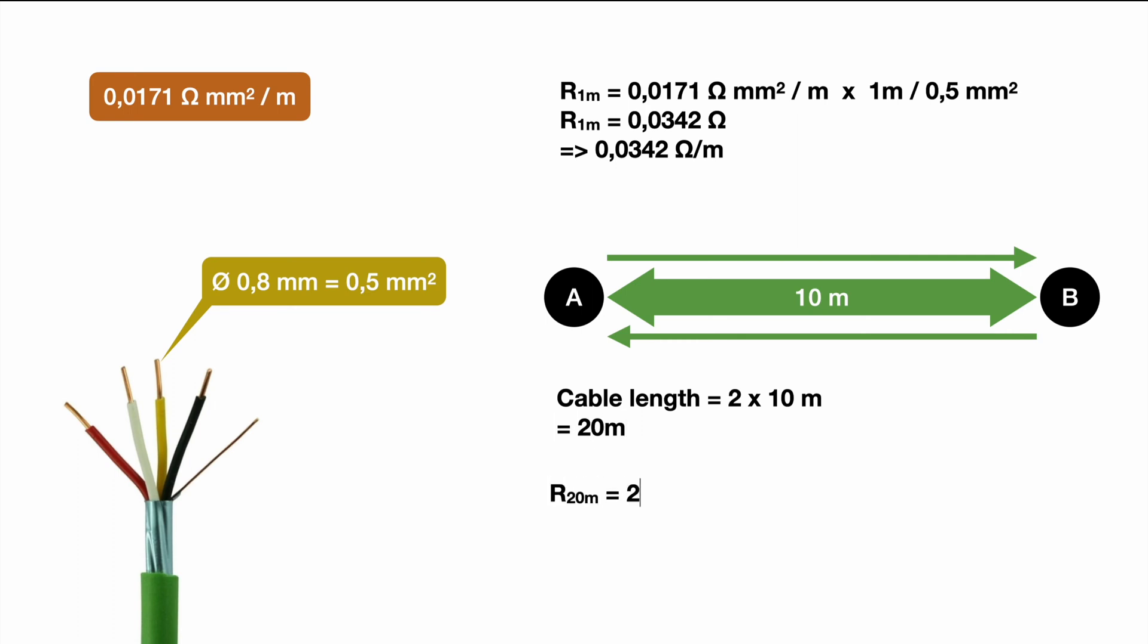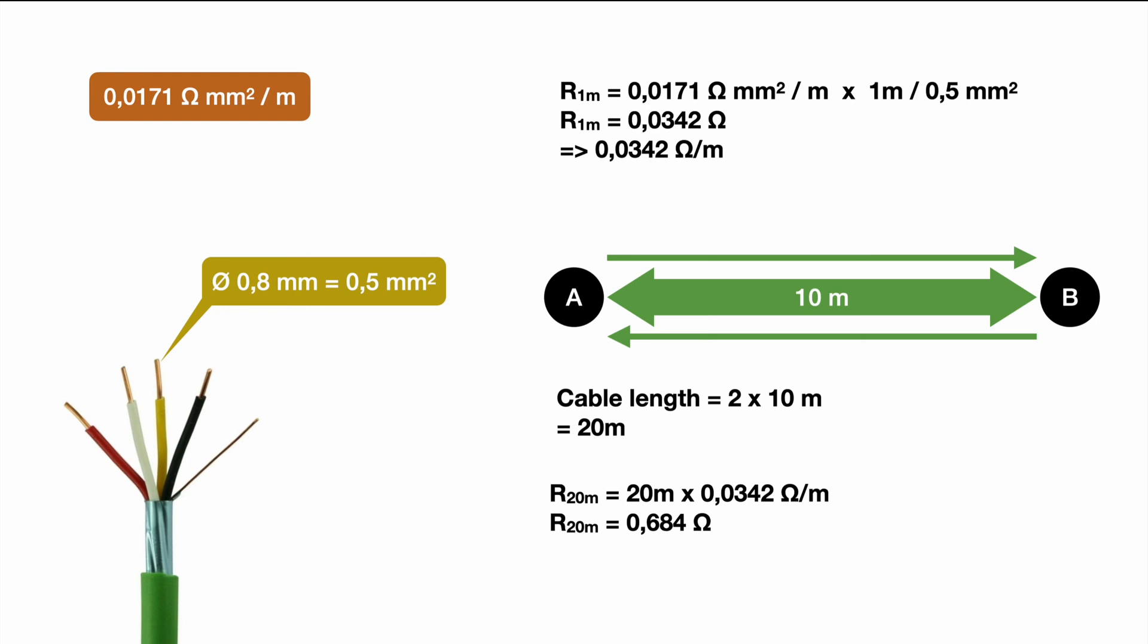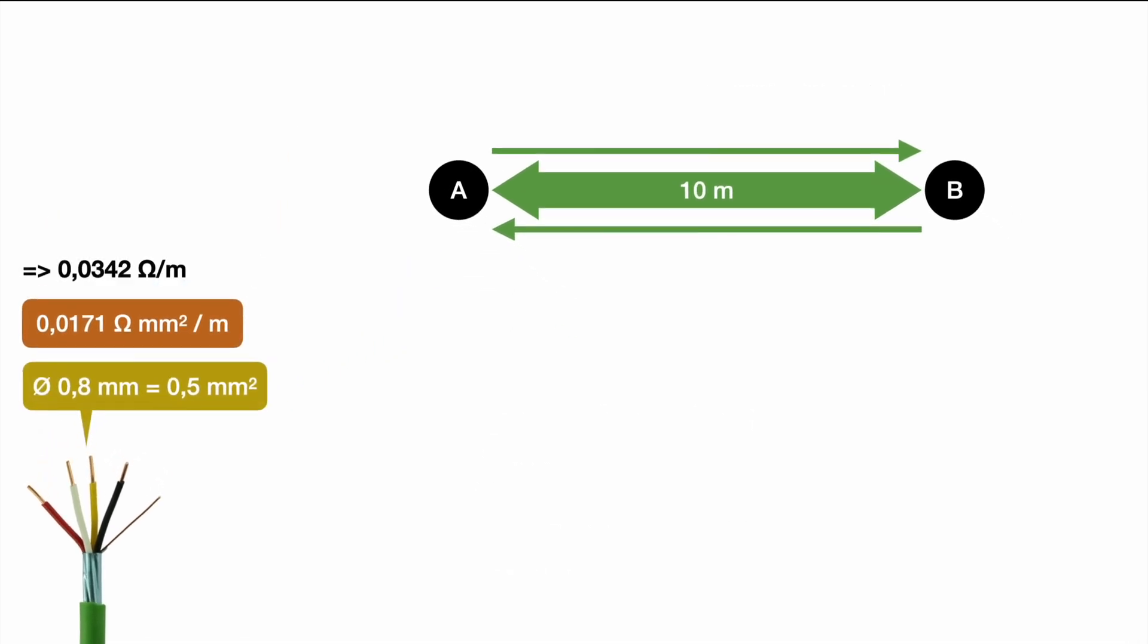Looking at our resistance this means for 20 meters we have to multiply our resistance per meter by 20 and we will end up with a resistance of 0.684 ohm for the whole round trip. So let's put all those numbers and theoretical calculations aside and take a look on a use case.